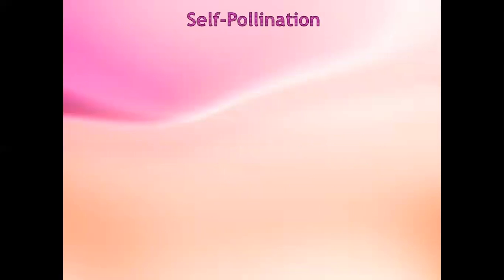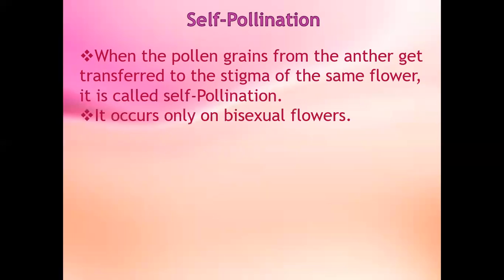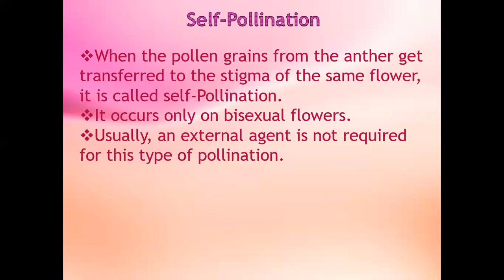There are two types of pollination: self-pollination and cross-pollination. When the pollen grains from the anther get transferred to the stigma of the same flower, it is called self-pollination. It occurs only in bisexual flowers. Usually an external agent is not required for this type of pollination.